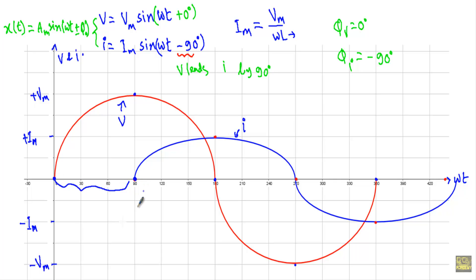From the waveforms, the origin of voltage V is 90 degrees ahead of the origin of current I. To go from the current's origin to the voltage's origin requires an angular distance of 90 degrees. Therefore, we can say that V leads I by 90 degrees in a pure inductor — in a pure inductor, voltage leads current by 90 degrees. In the next video I will show you how to draw the phasor diagram and the value of instantaneous and average power absorbed by the inductor.